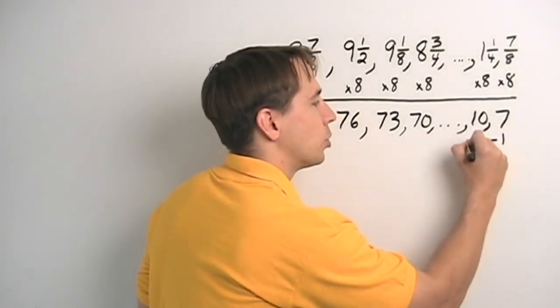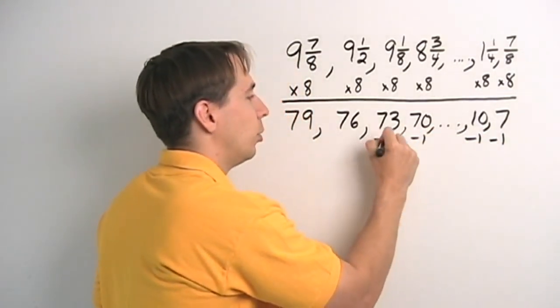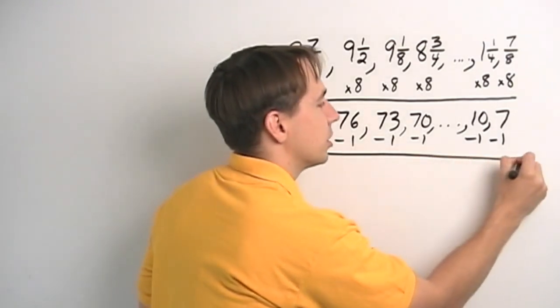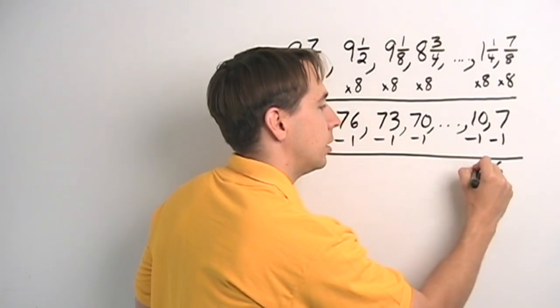And we can do that by subtracting 1. Look, I'm thinking ahead here. I'm already starting from the end, because I know I'm going to count from the end. And I subtract 1 from each number in this list, and we get a new list. We have 6, 9.